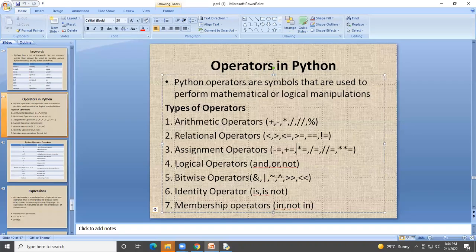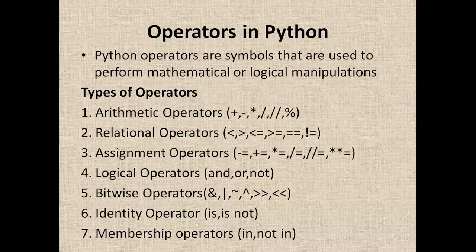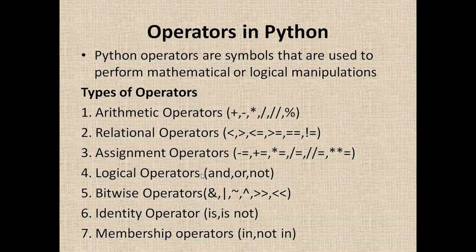The next operators are logical operators: 'and', 'or', and 'not'. For the 'and' operator, two conditions are evaluated. If both conditions are True, the output is True. If any condition is False, the output is also False.